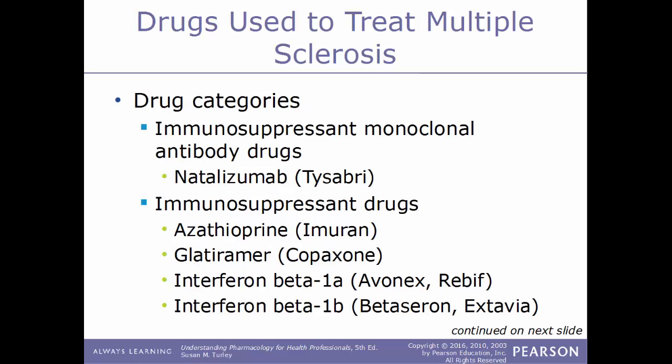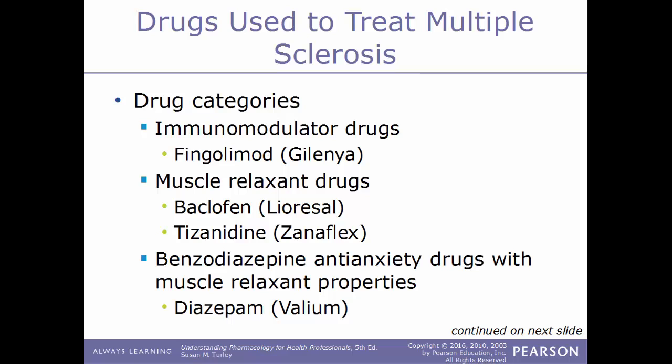There are multiple drug categories used to treat MS. An immunosuppressant monoclonal antibody drug natalizumab (Tysabri); immunosuppressants including azathioprine (Imuran), glatiramer (Copaxone), interferon beta-1a (Rebif/Avonex), and interferon beta-1b (Betaseron/Extavia); an immunomodulator fingolimod (Gilenya); and muscle relaxants such as baclofen (Lioresal) and tizanidine (Zanaflex).